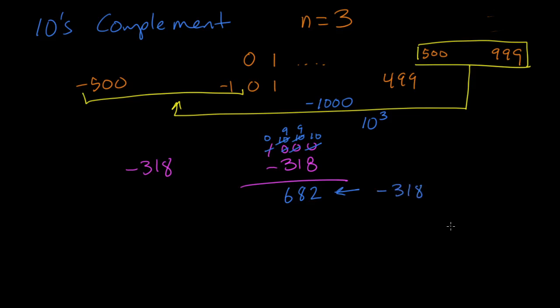Doesn't that just blow your mind that negative 318 and 682 are the same number? Well, one thing we should be able to do is if we take negative 318 and we add 318, we should get 0. Let's try it out.